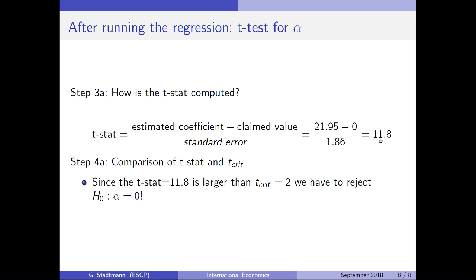We know that alpha is unequal to zero. As you can see, the interpretation of the confidence interval and the interpretation of the t-test guide us in the same direction. This has been a brief introduction to how we can perform a regression in Excel and how to interpret the regression output. Thank you very much for watching this video, and see you in class.